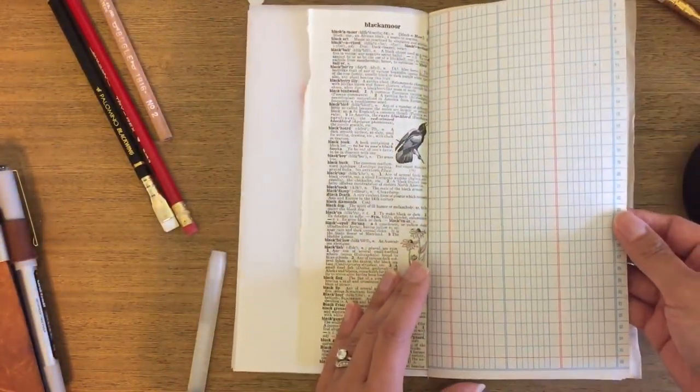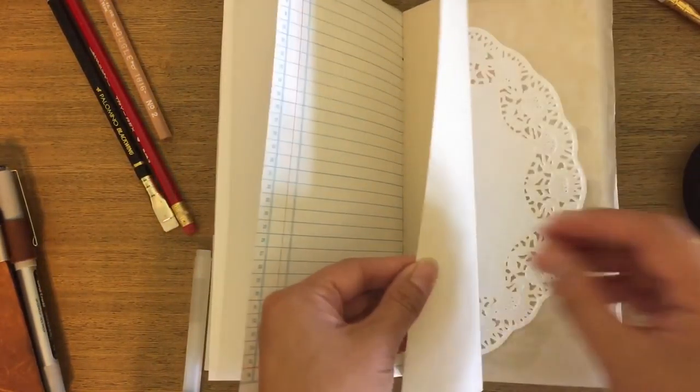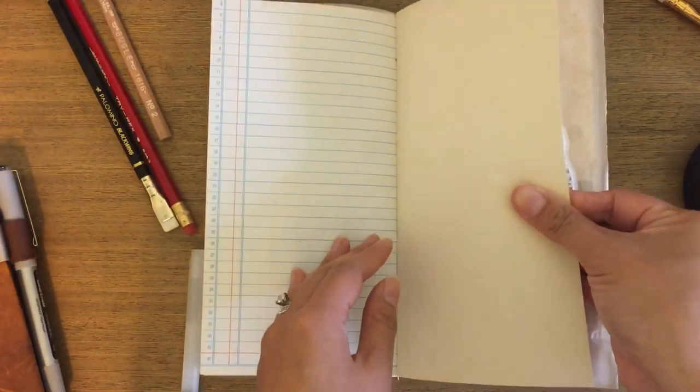More trace paper, an old dictionary page that I ripped out of an old dictionary that I picked up recently. This is old ledger paper as well that I've had for a long time. I love ledger paper.